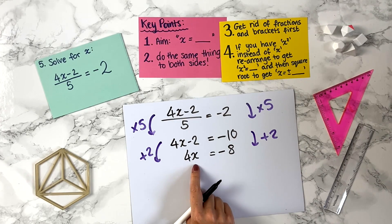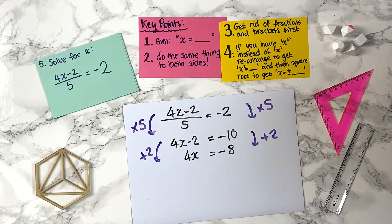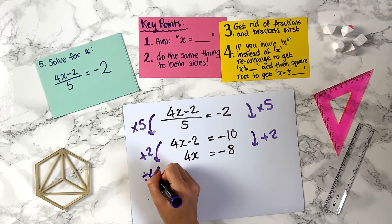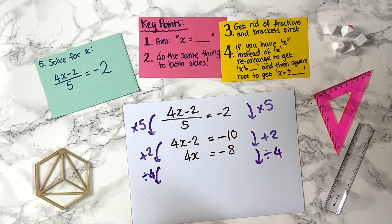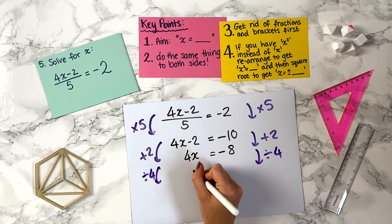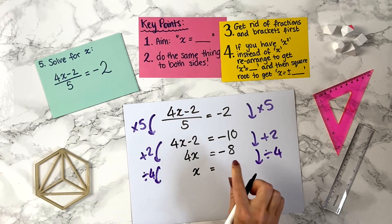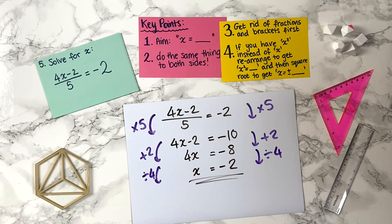To get x on its own, we currently have 4 times x, so we divide by 4 on both sides: 4x divided by 4 is x, and minus 8 divided by 4 is minus 2. So the answer is x equals minus 2.